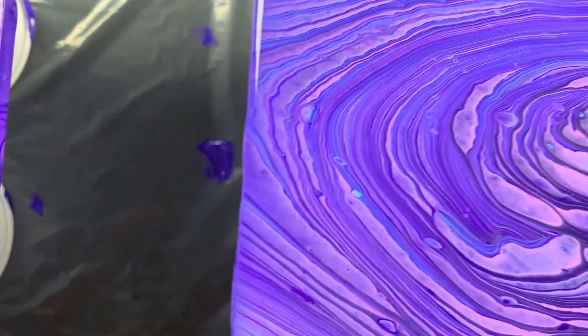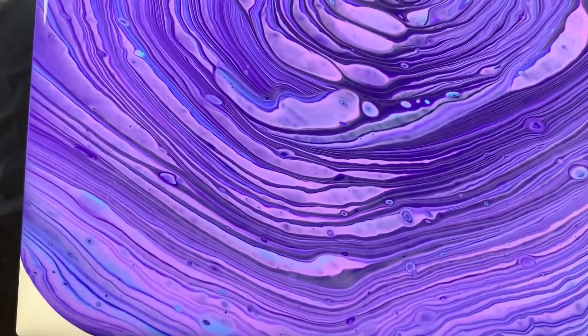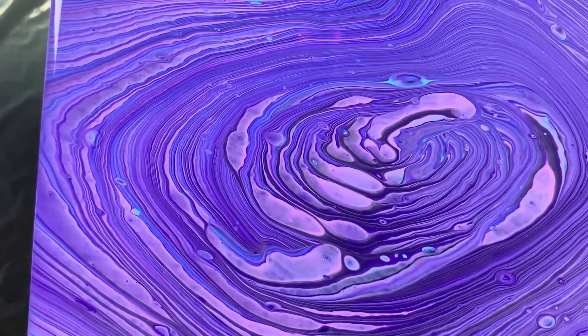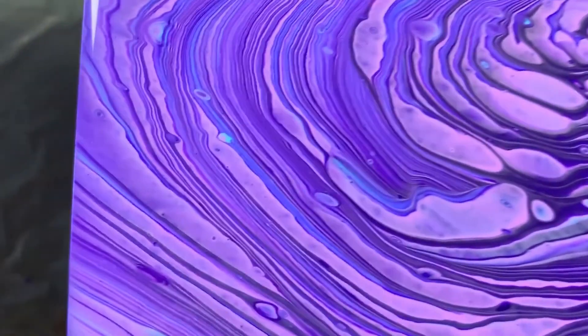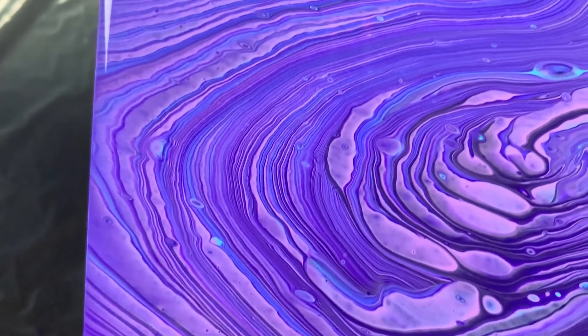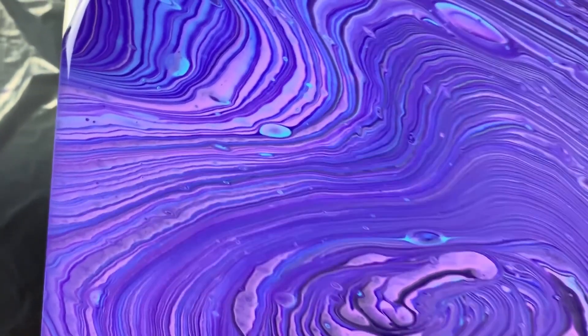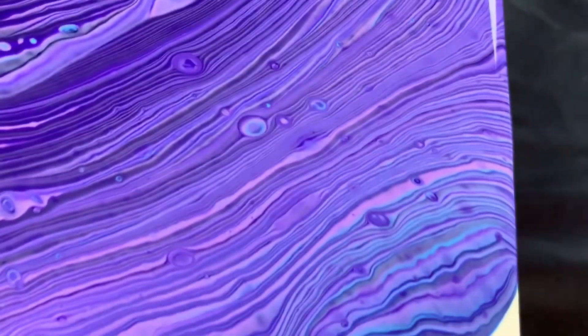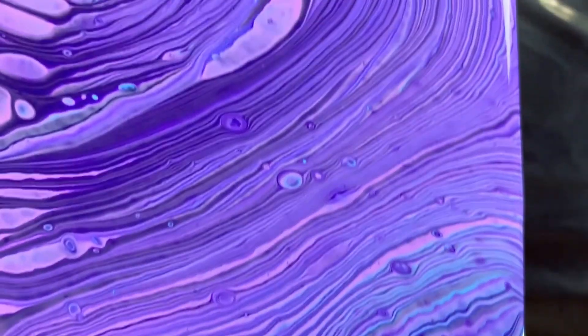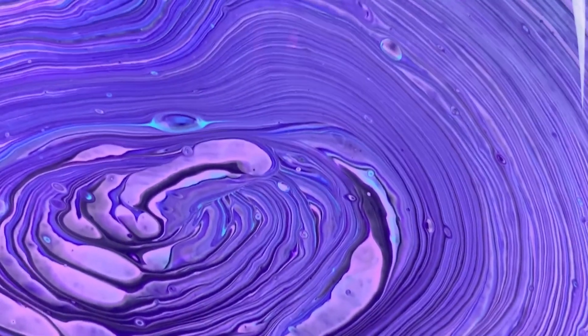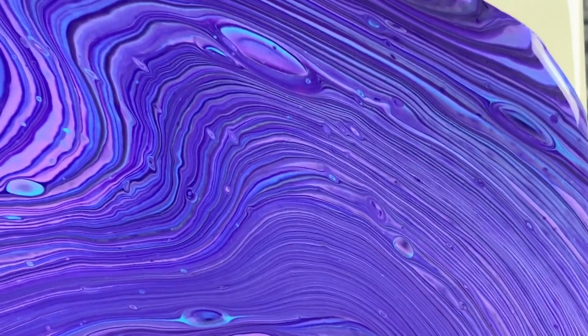Then moving on to the next one. This one was the Floetrol and paint together. So this one, you can see some of the lines did get stretched out. There is cells that were generated on this pour. But the lines are also pretty crisp, very minimal blending on the lines.